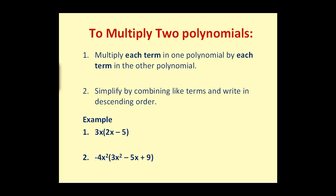Let's move along to polynomials. To multiply two polynomials, we multiply each term in one polynomial by each term in the other polynomial, then simplify by combining like terms and write in descending order. So if we have a monomial times a binomial, we have to multiply 3x times the 2x and also times the -5.